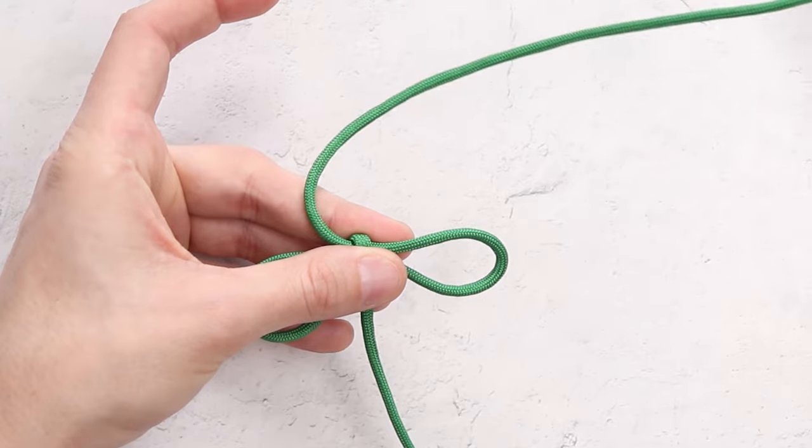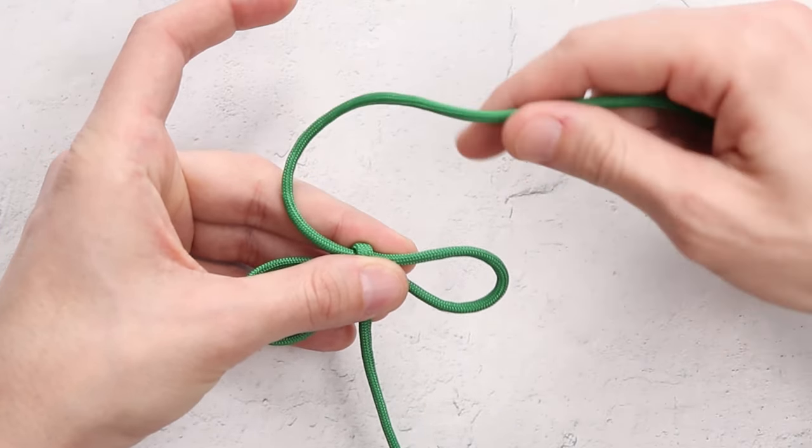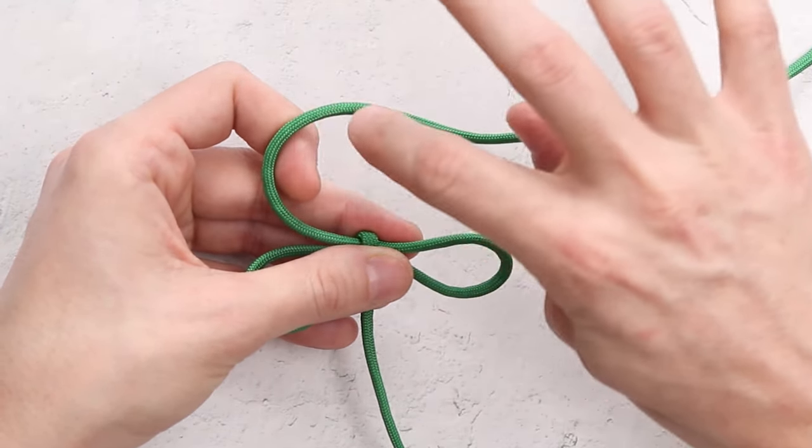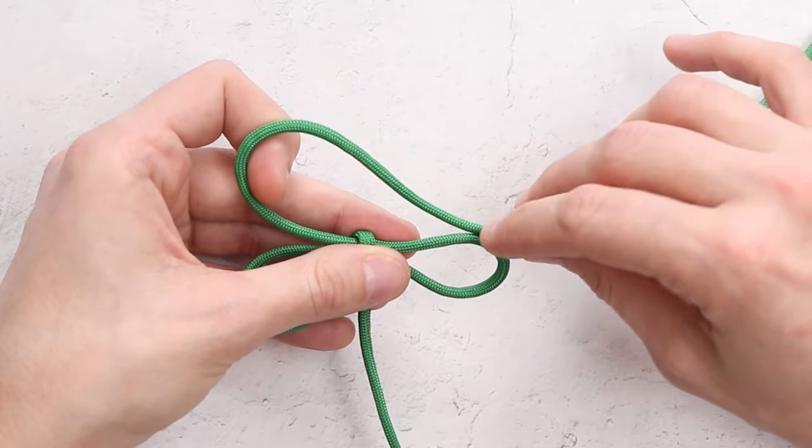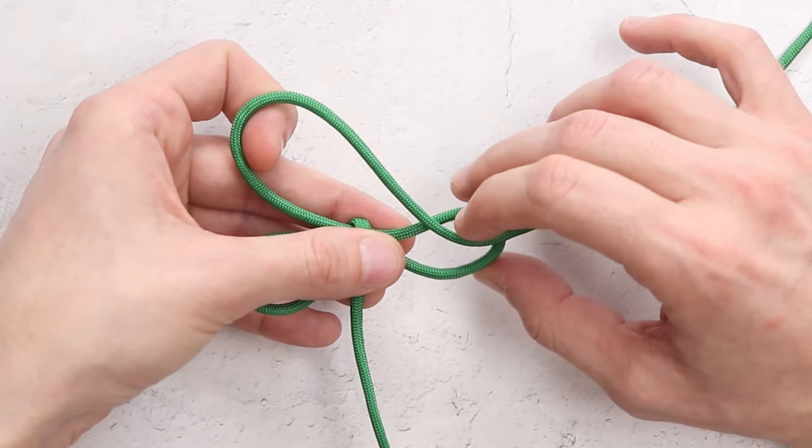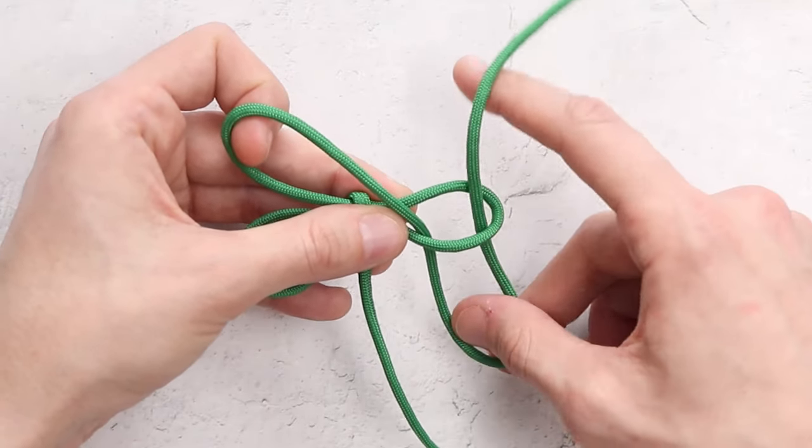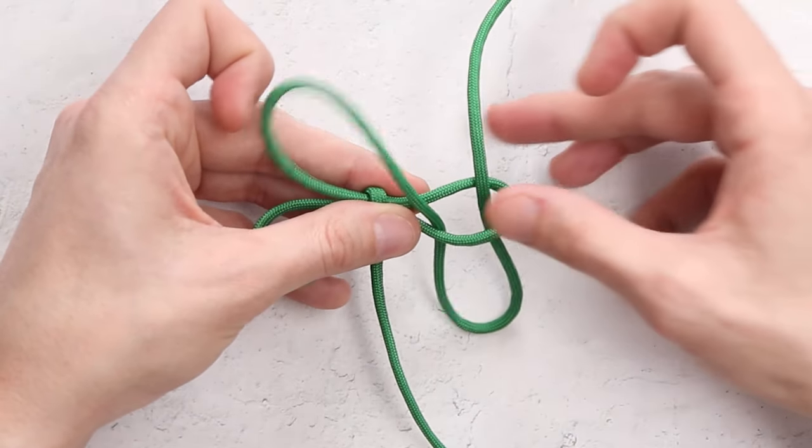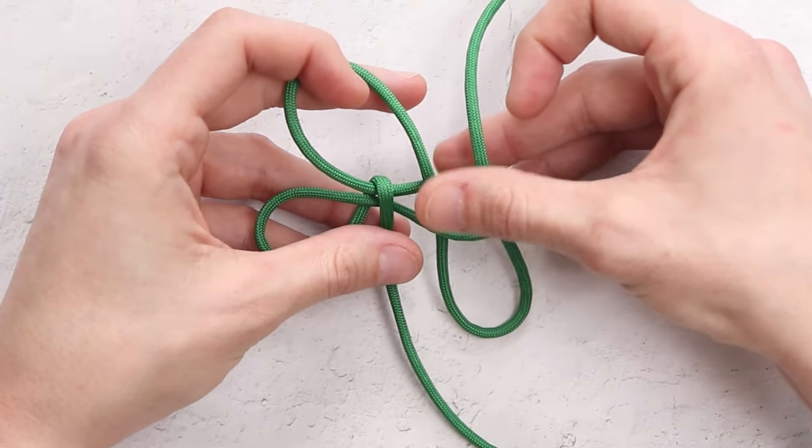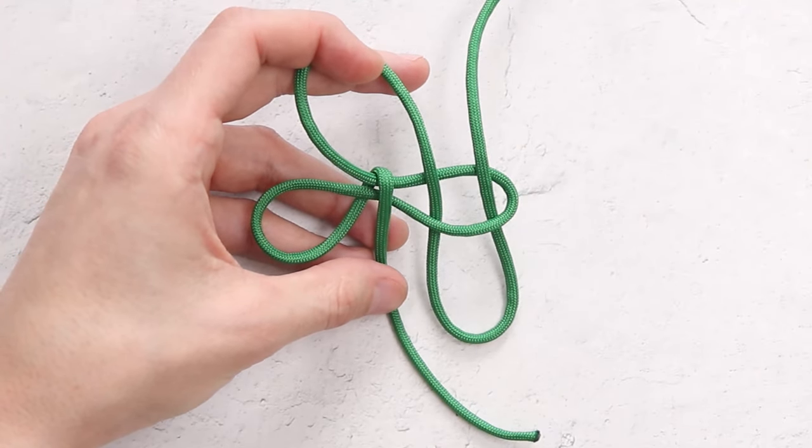Our next step is we're going to take our right working strand, and we're going to loop it around this left side, and then we're going to bring it through the bottom right loop, and we're going to make a little bit of a U on the bottom of our knot. So we want something to look like that.